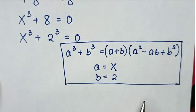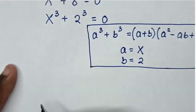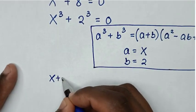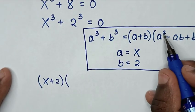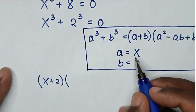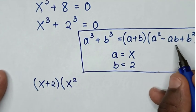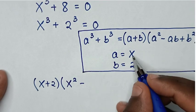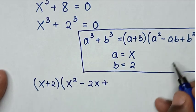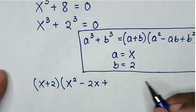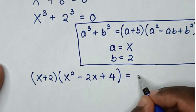Then in the next step, it will be (x + 2) times (x² - 2x + 4) = 0. That is: a + b gives x + 2, then a² gives x², then minus ab gives minus 2x, then plus b² gives 2² which is 4, then bracket equals 0.